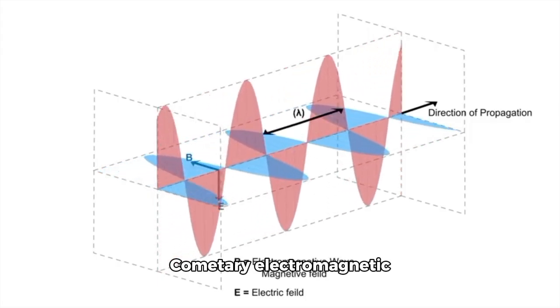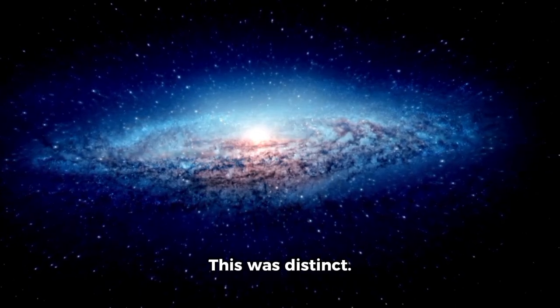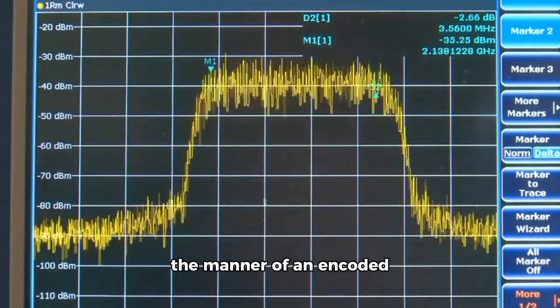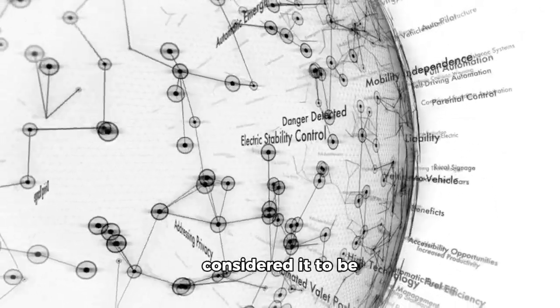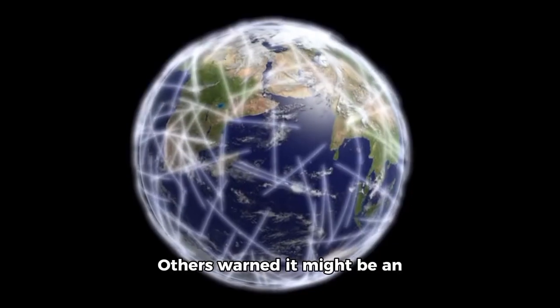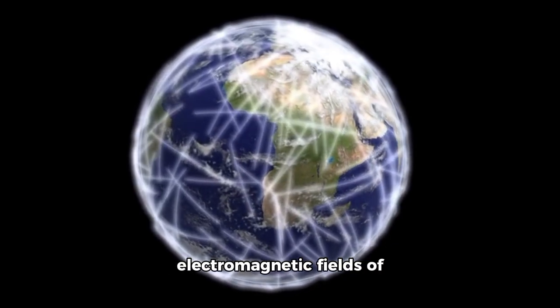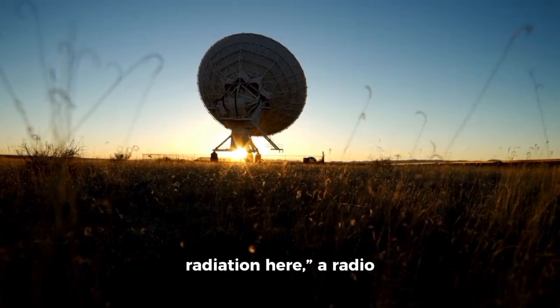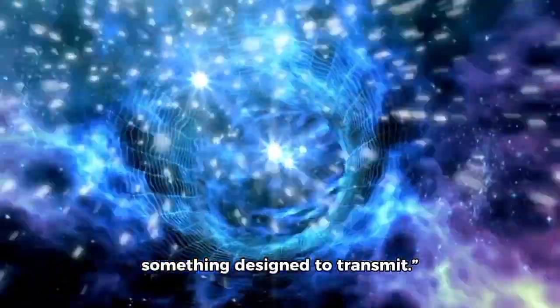Cometary electromagnetic emissions occur, but weakly and sporadically. This was distinct. It was consistent. It shifted frequencies in the manner of an encoded signal, tuning itself. Various researchers considered it to be communication, navigation, or internal system control. Others warned it might be an attempt to interface with the electromagnetic fields of Earth's environment. It's not background radiation here, a radio astronomer asserted. This is a transmission from something designed to transmit.